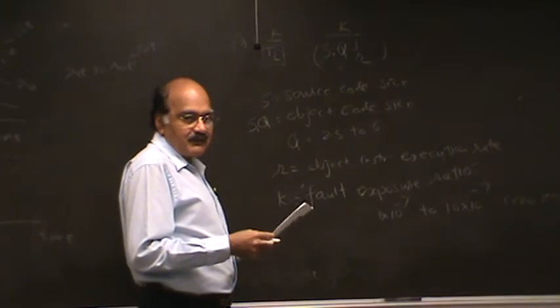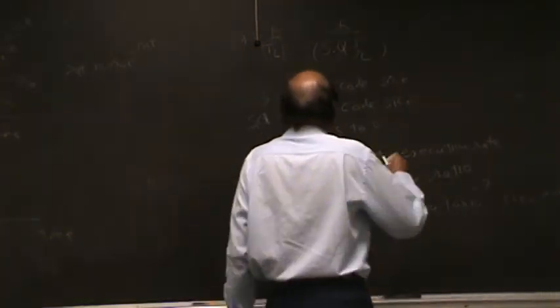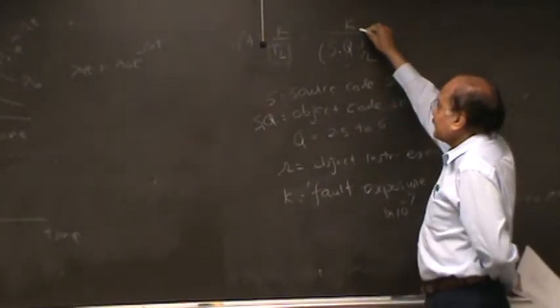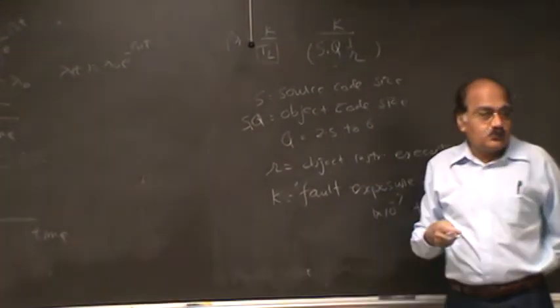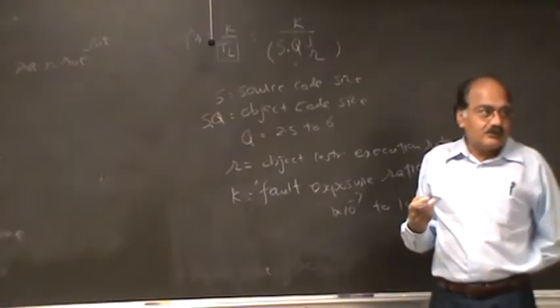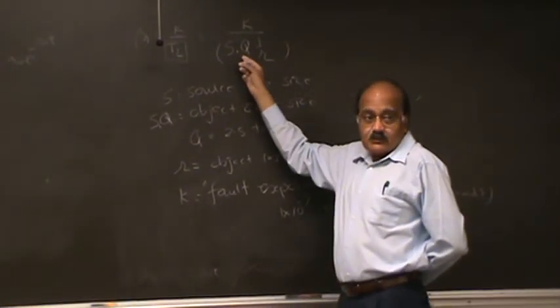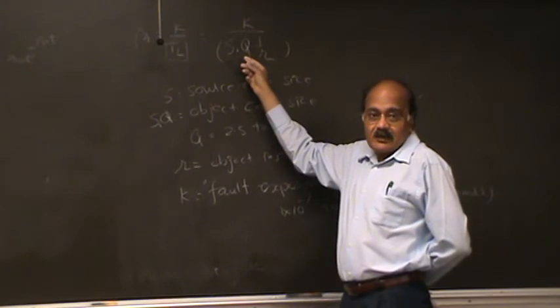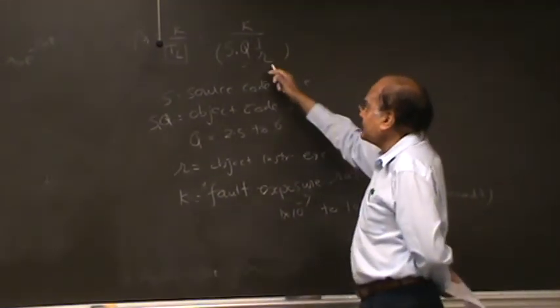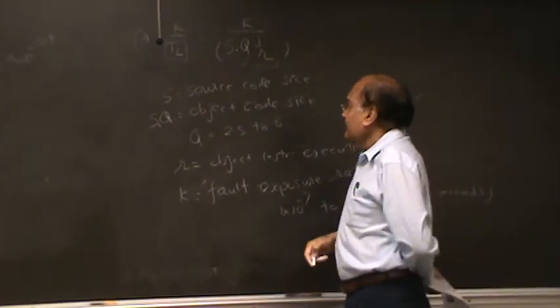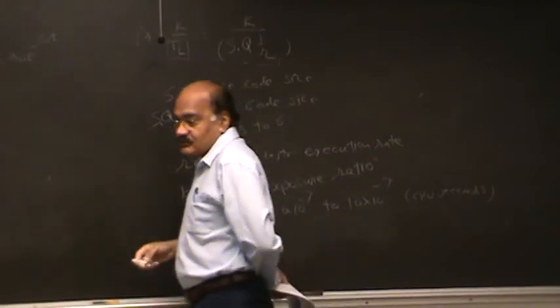We are going to look at some numerical examples. Basically, notice that this is a constant. This is your software size. This is sort of a constant which has to do with your high-level language. For more efficient high-level languages, Q would be higher. If the whole thing is in assembly language, your Q is going to be one. Because for each assembly language instruction, you have one machine language instruction. This is the instruction execution rate. Basically, notice that beta 1 is inversely proportional to software size.